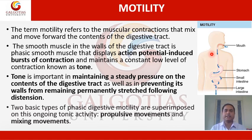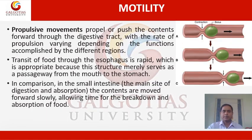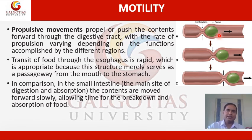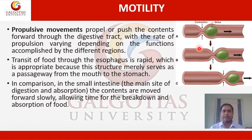Two basic types of phasic digestive motility are superimposed on this ongoing tonic activity: propulsive movement and mixing movement. Propulsive movement propels or pushes the contents forward through the digestive tract, with the rate of propulsion varying depending on the function of each region. Transit through the esophagus is rapid, as it merely serves as a passageway. In contrast, in the small intestine — the main site of digestion and absorption — contents are moved forward slowly, allowing time for breakdown and absorption of food.